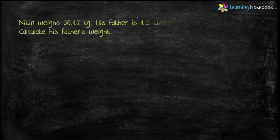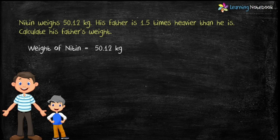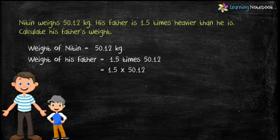Last question: Nitin weighs 50.12 kg. His father is 1.5 times heavier than he is. Calculate his father's weight. Let's solve it. Weight of Nitin is 50.12 kg. Weight of his father equals 1.5 times of 50.12, which is equal to 1.5 multiplied by 50.12.